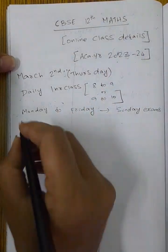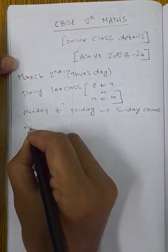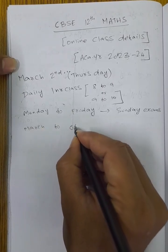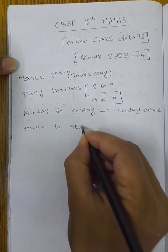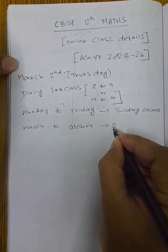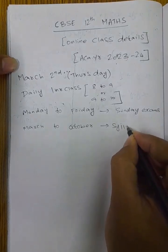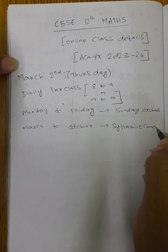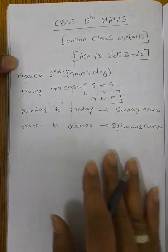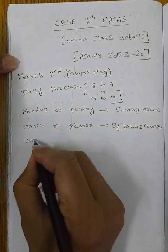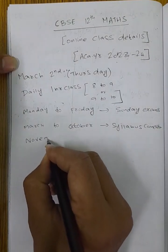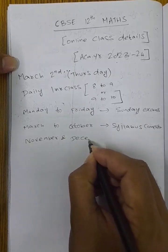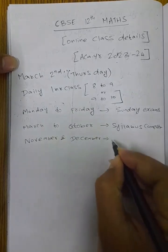The total number of classes is 24, starting March 2nd through October. You will complete the syllabus — the total syllabus is complete by October. November and December month is for full revision.